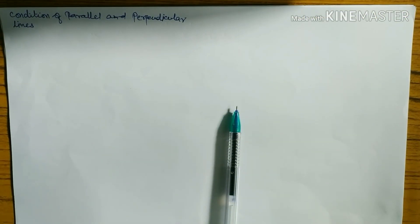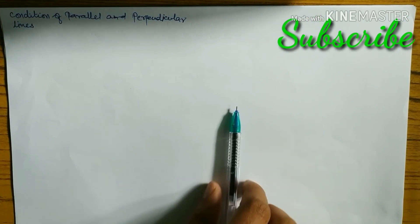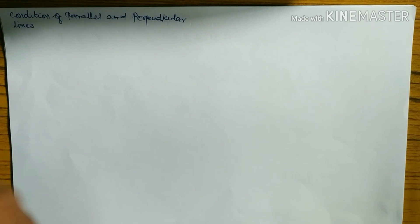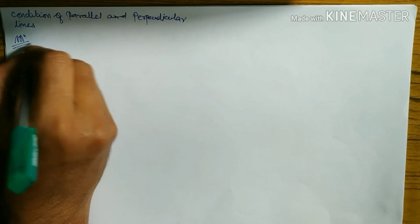I'm here with coordinate geometry equations. Today I'm going to teach you the condition of parallel and perpendicular lines — lines which are parallel to another line and lines which are perpendicular to another line — and what the conditions are and how to write the equation of parallel and perpendicular lines. I already uploaded videos related to these things, but I'm going to repeat this condition again.